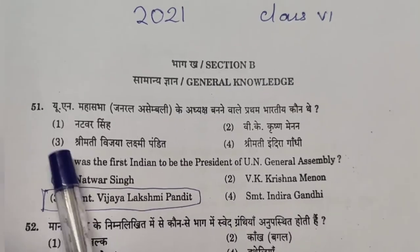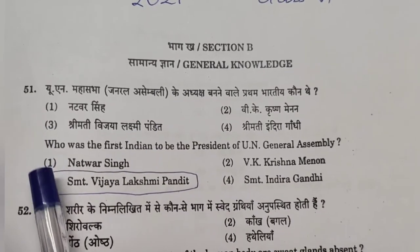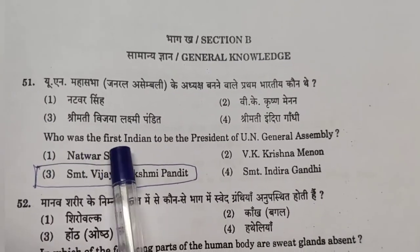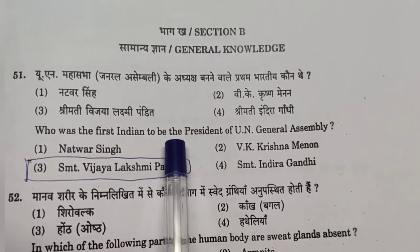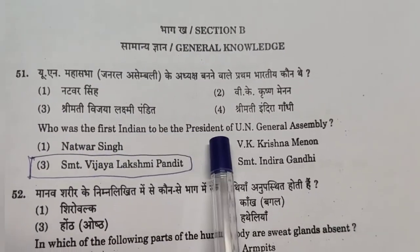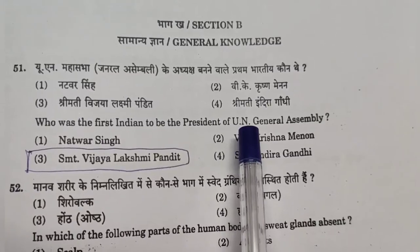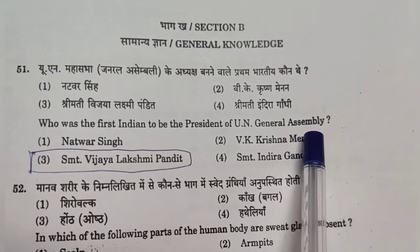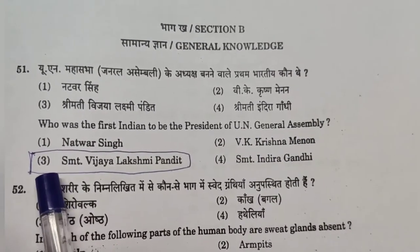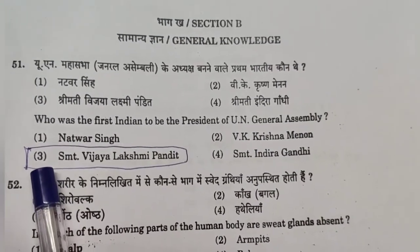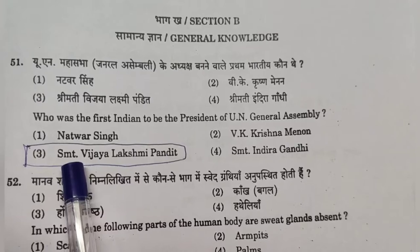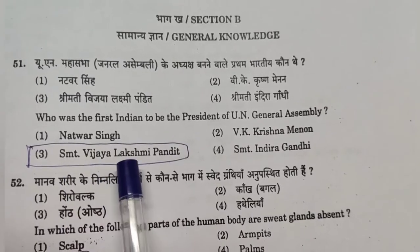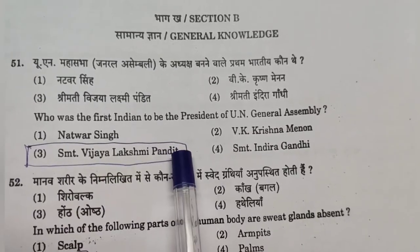Question number 51: Who was the first Indian to be the President of the UN General Assembly? Answer: Option C — Shreemati Vijayalakshmi Pandit.